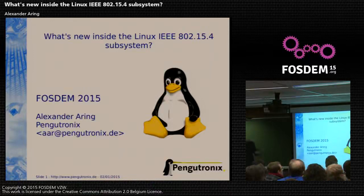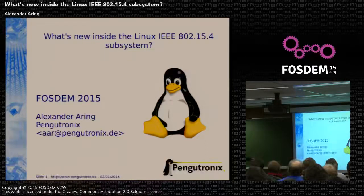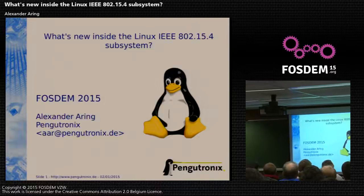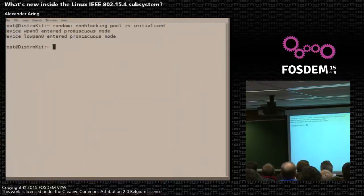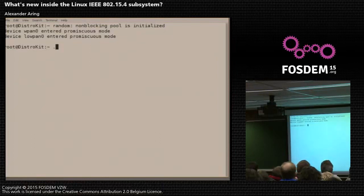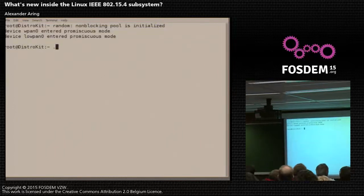Welcome to my presentation about what's new inside the Linux IEEE 802.15.4 subsystem. First I want to demonstrate a little demo. I set up two virtual machines, and each has a USB IEEE 802.15.4 transceiver connected. And I ping between the nodes inside the virtual machines.